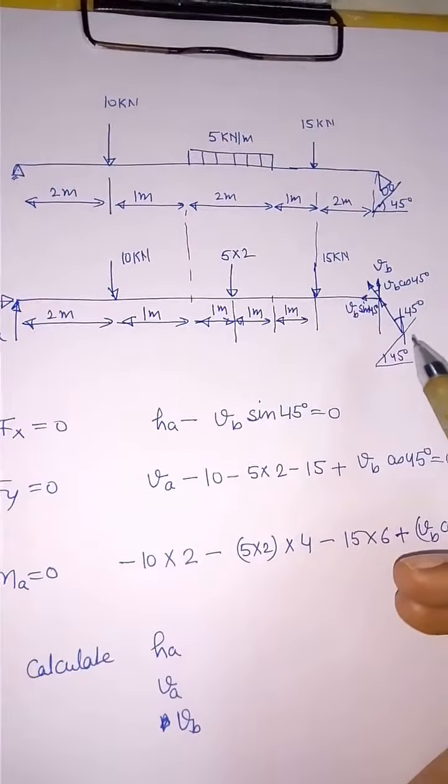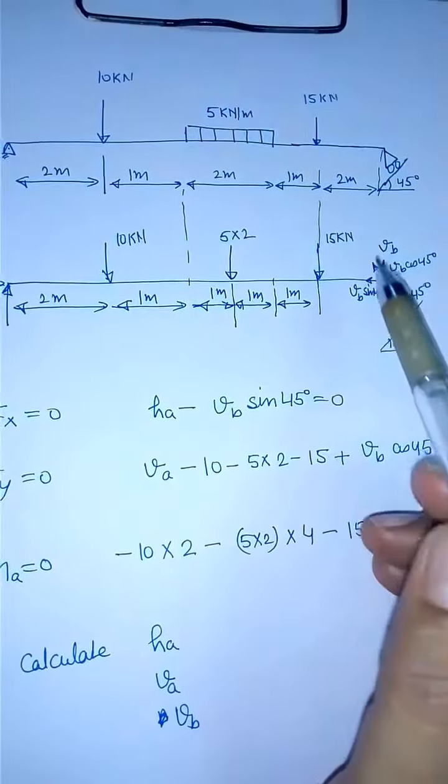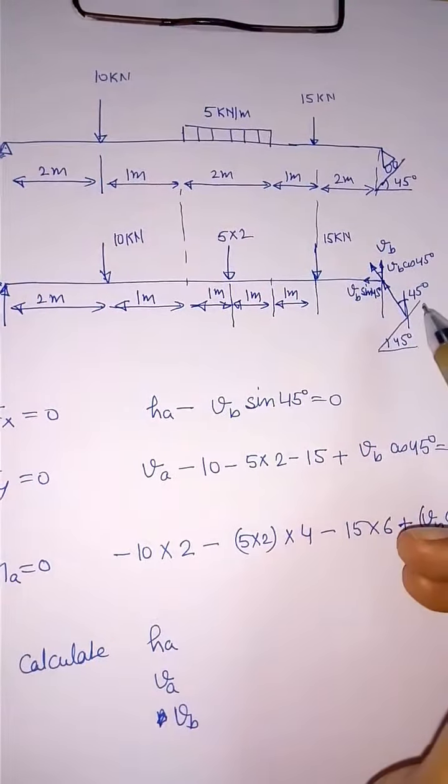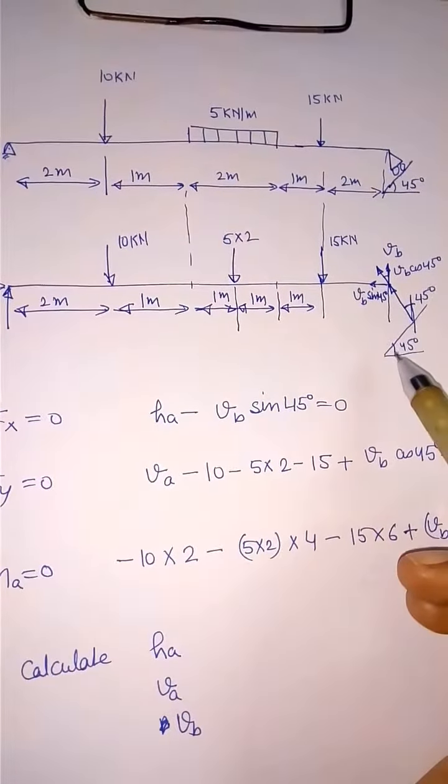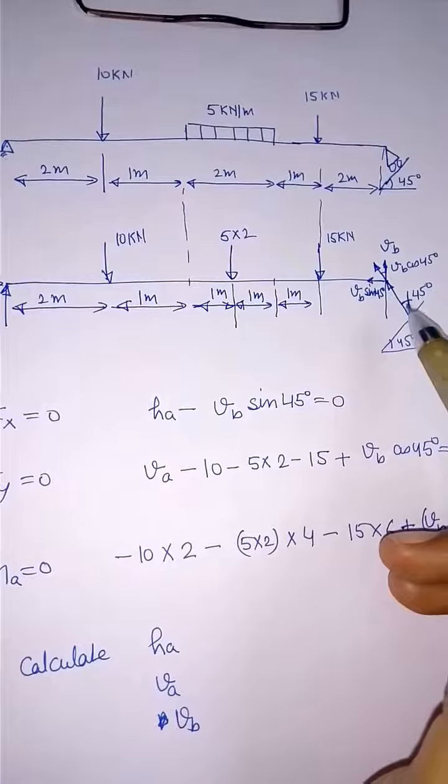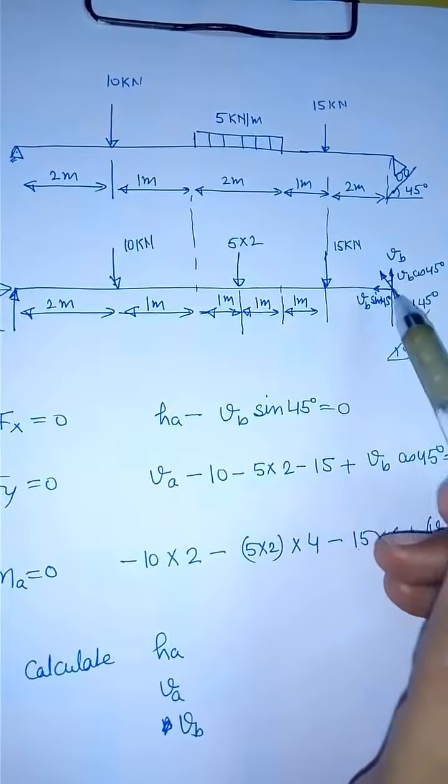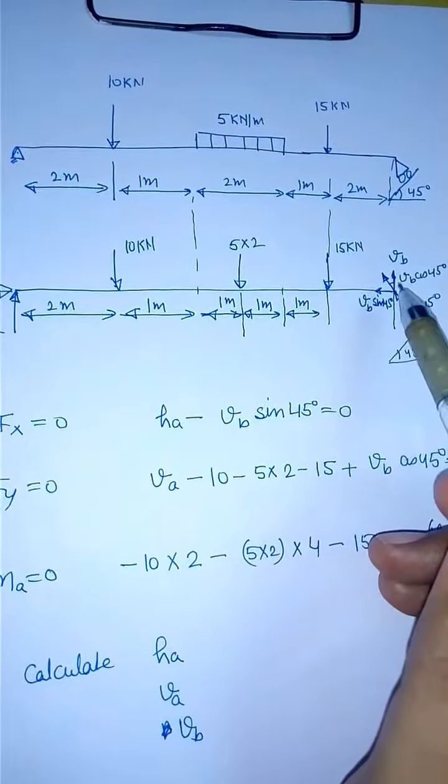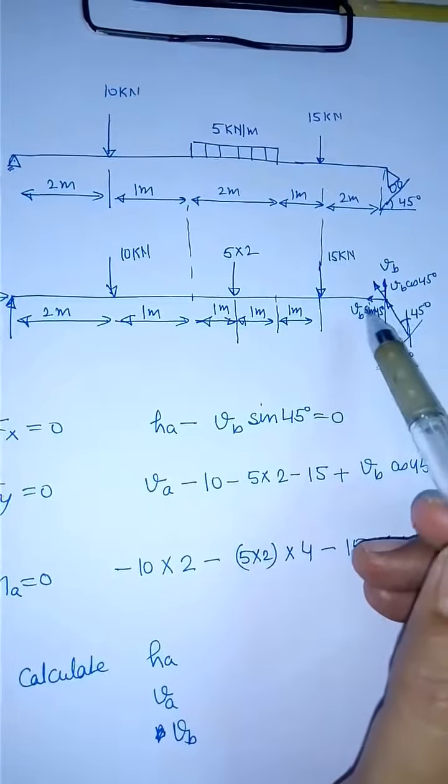Now let us understand - the reaction is going to be perpendicular to the surface, perpendicular to this inclined surface. So it will make the same angle from the vertical as the surface inclination. It is going to be like this, so we will resolve it in two components: VB cos 45 and VB sin 45.